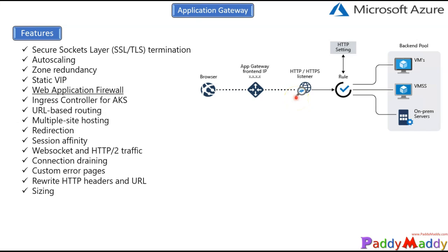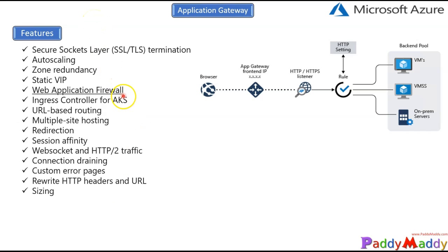You can choose to route requests to one of the backend pools based on the original URL path — as discussed earlier with the images and videos example. For sizing, Application Gateway can be configured with the Standard_v2 SKU, which supports most features. The average backend response size ranges from 6 KB to 100 KB, and bandwidth options range from 7.5 Mbps, 13 Mbps, or 50 Mbps for small, medium, or large Application Gateway sizes.